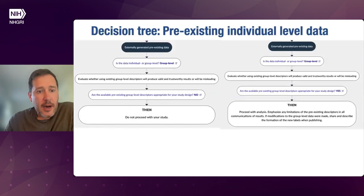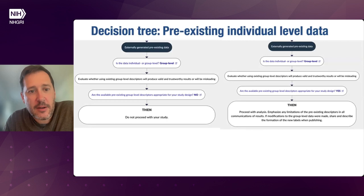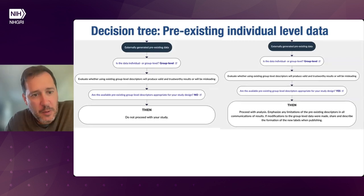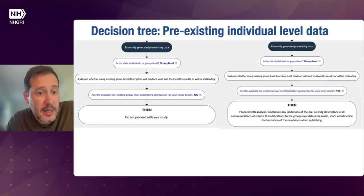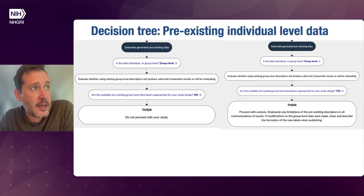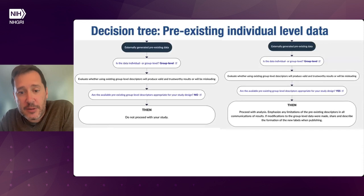Supposing that you don't have individual-level data and instead have preexisting group-level data, there are two different cases. If you have group-level data, you would be prompted to evaluate whether the existing group-level descriptors will produce valid and trustworthy results or whether they will be misleading. If the preexisting descriptors are not appropriate for your study, then you shouldn't proceed — that's the limitation of doing responsible, trustworthy research. But if they are appropriate, you can proceed with the analysis.